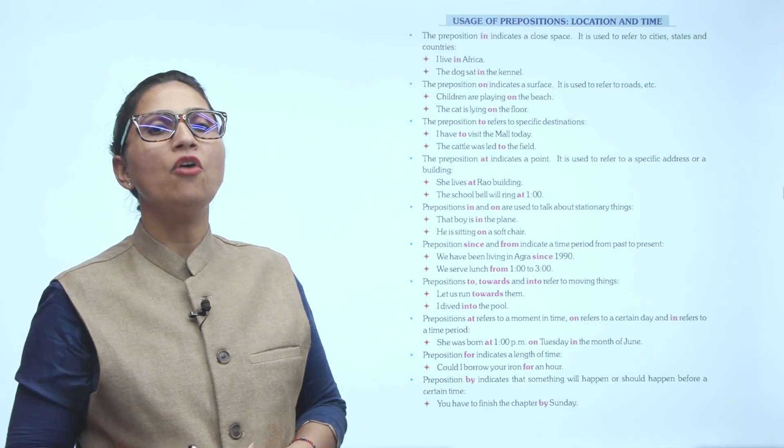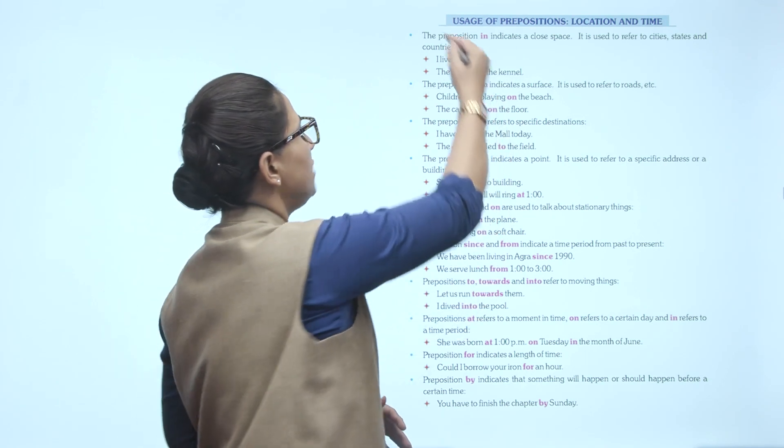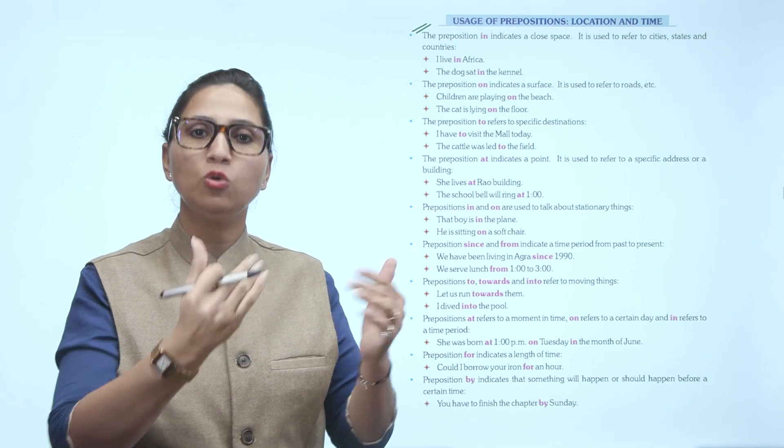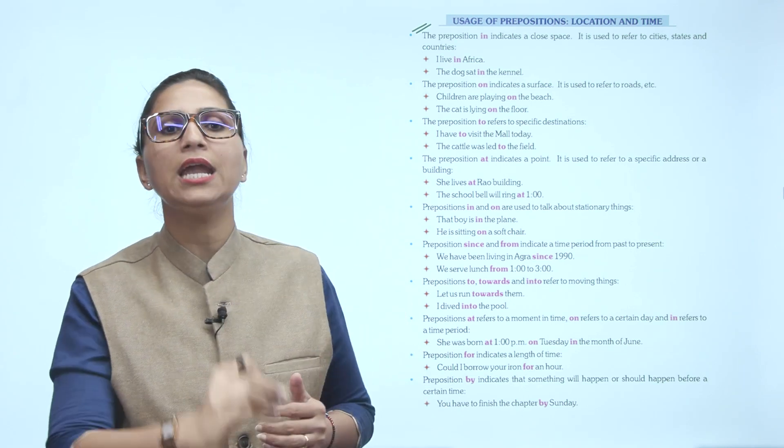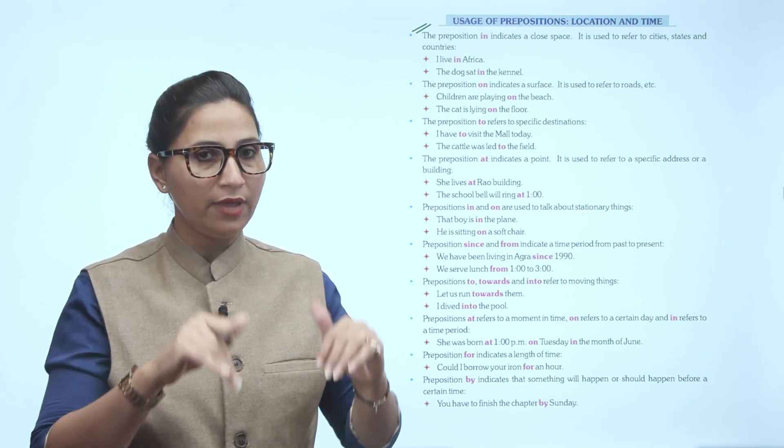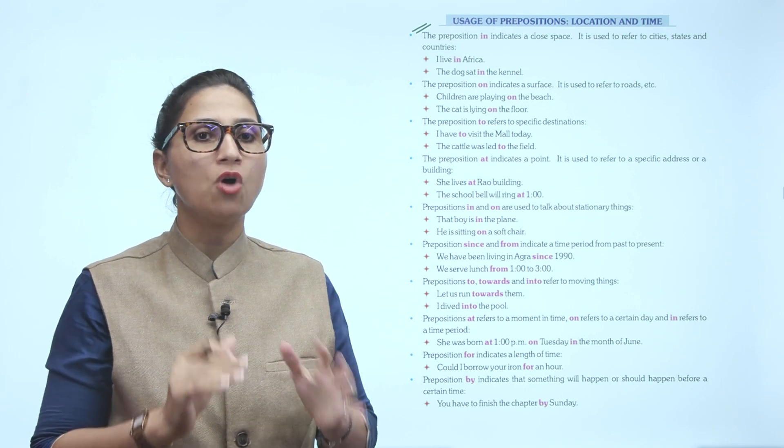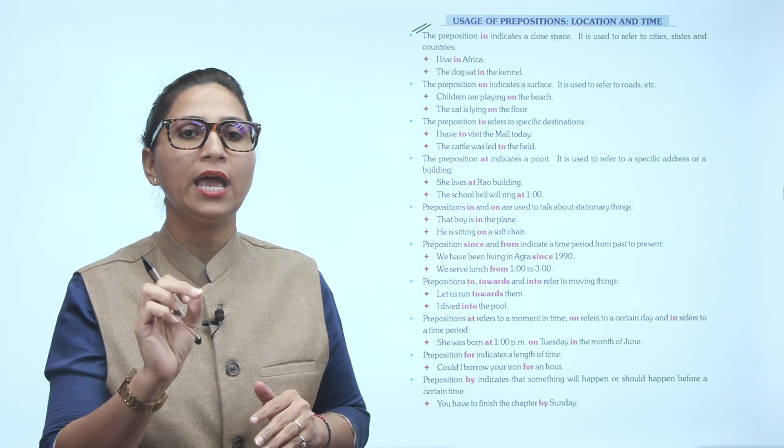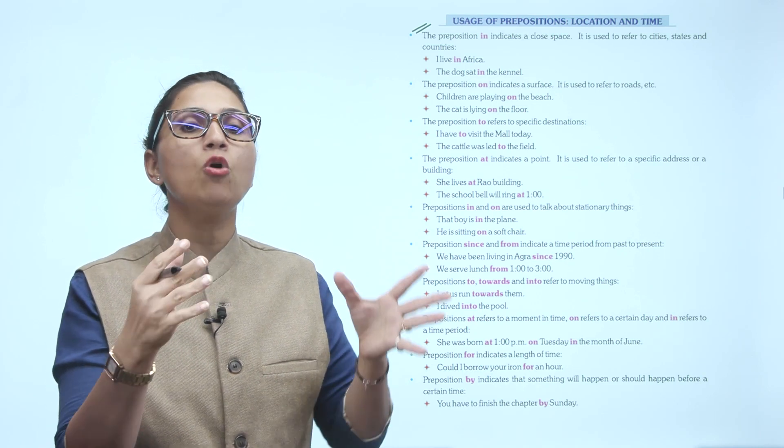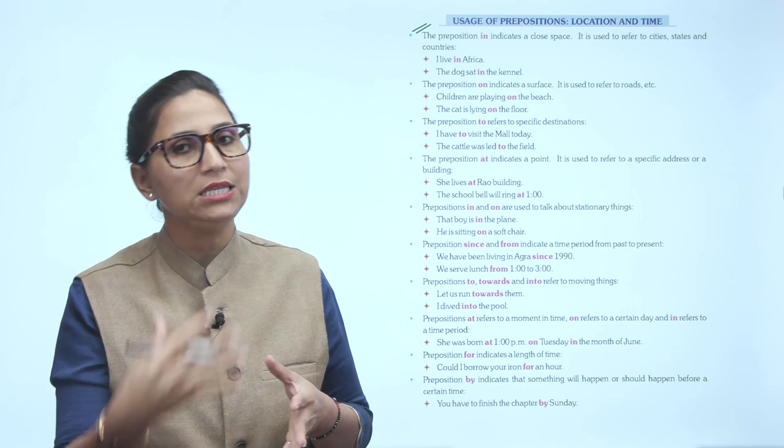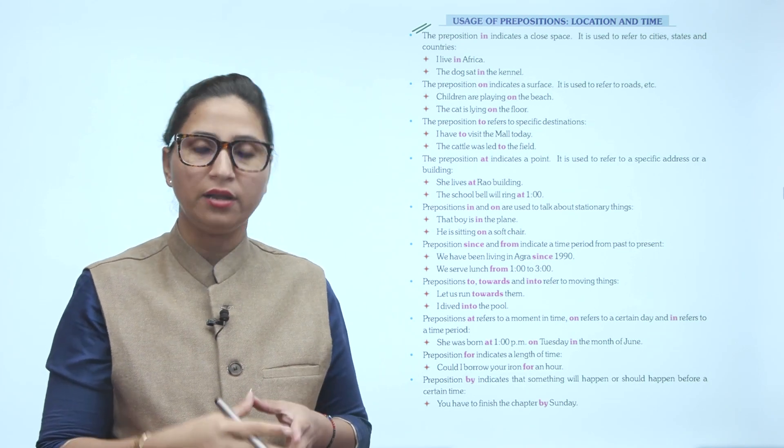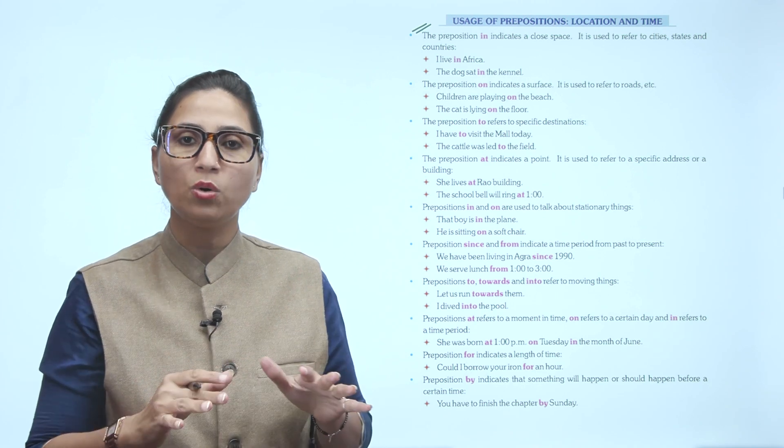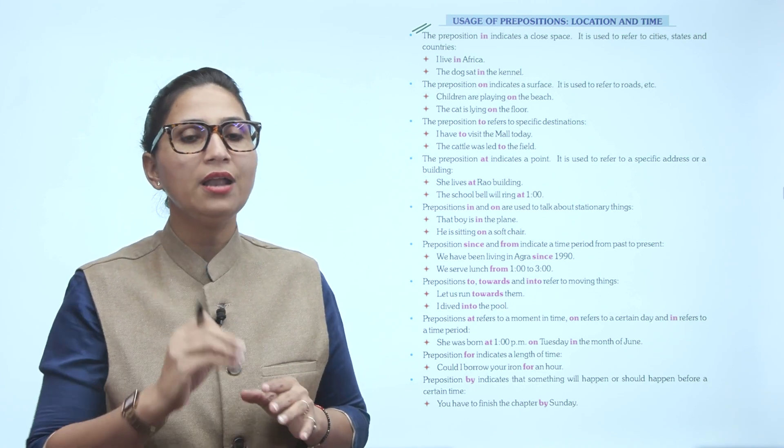Usage of prepositions location and time. The preposition IN indicates a closed space. It is used to refer to cities, states and countries. I live in Africa. The dogs are in the canal. So what are prepositions showing here? They are showing closed space for cities, states or countries.